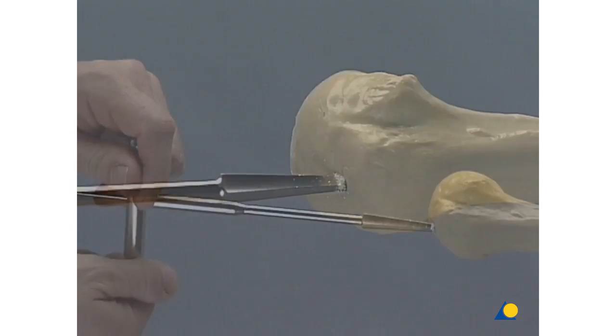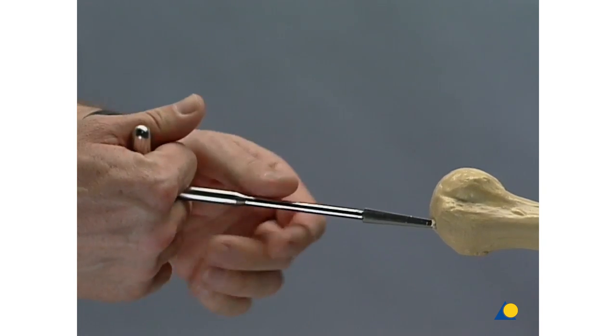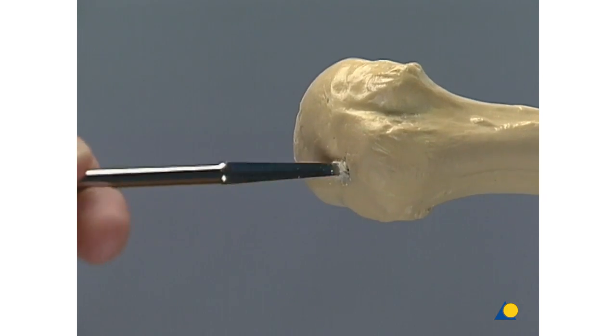Loosen the screw to release the Kirschner wire and open the medullary cavity.